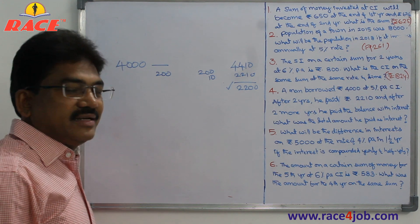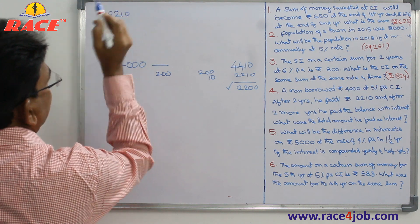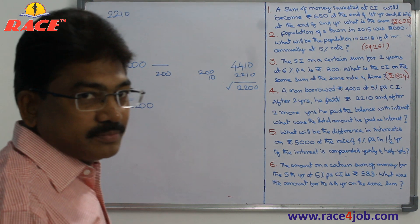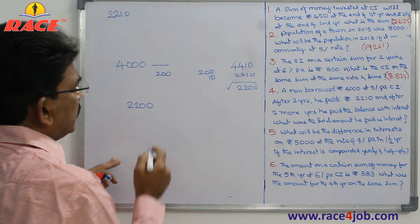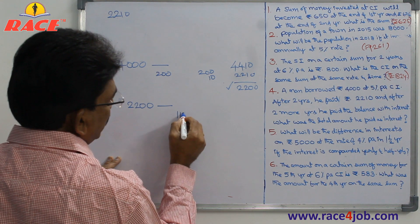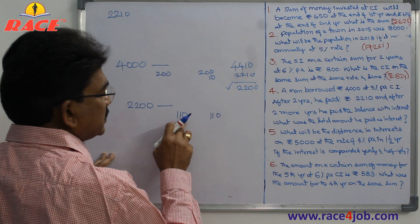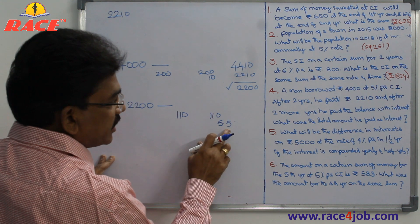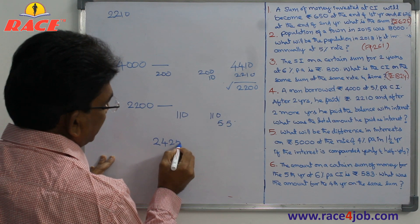On the remaining 2,200, interest is calculated for the next 2 years. So far he has cleared 2,210 and still has 2,200 to pay plus interest. For 2,200 at 5%: after 1 year, 10% of 2200 is 220 so 5% is 110. In the second year, 110 again plus 5% on 110. 10% of 110 is 11, so 5% is 5.5. Total interest on 2,200 is 225.5, making the amount 2,425.5.